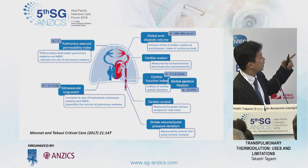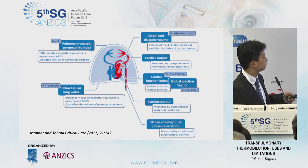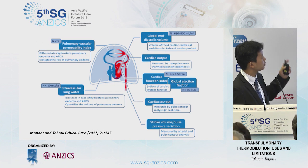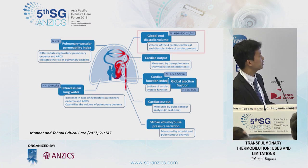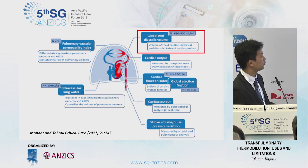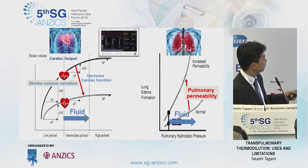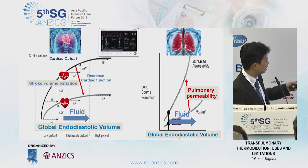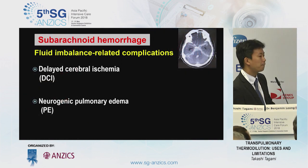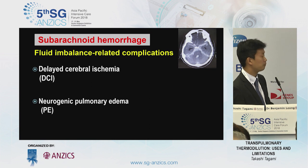The variables include cardiac output, cardiac function index, and stroke volume variation. In my talk, I will concentrate on three variables unique to this system. The first is global end-diastolic volume — the volume of the four cardiac chambers at end-diastole. It is an index of cardiac preload. According to the thermodilution curve, the global end-diastolic volume is derived here. This is a volume, not a pressure like central venous pressure or wedge pressure — it is the actual volume of the four chambers.